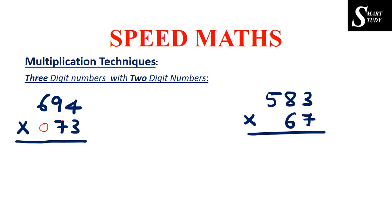The five steps are: first, multiply the units places; second, cross multiplication of units places with tens places; third, cross multiplication of units places with hundreds places and multiplication of tens places; fourth, cross multiplication of tens places with hundreds places; and fifth, multiplication of hundreds places. This same procedure applies when a three digit number is multiplied by a two digit number with a zero placed in front.